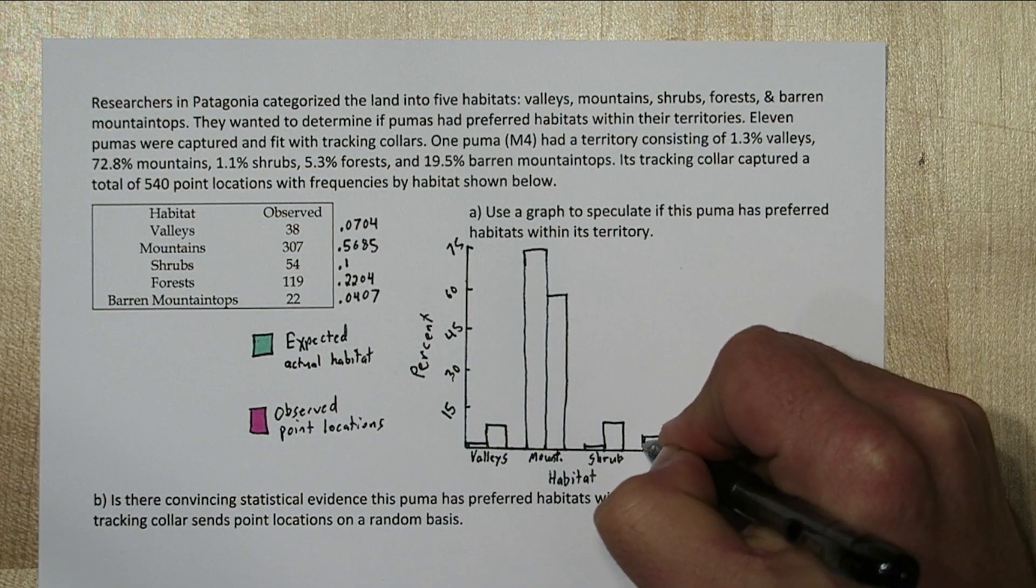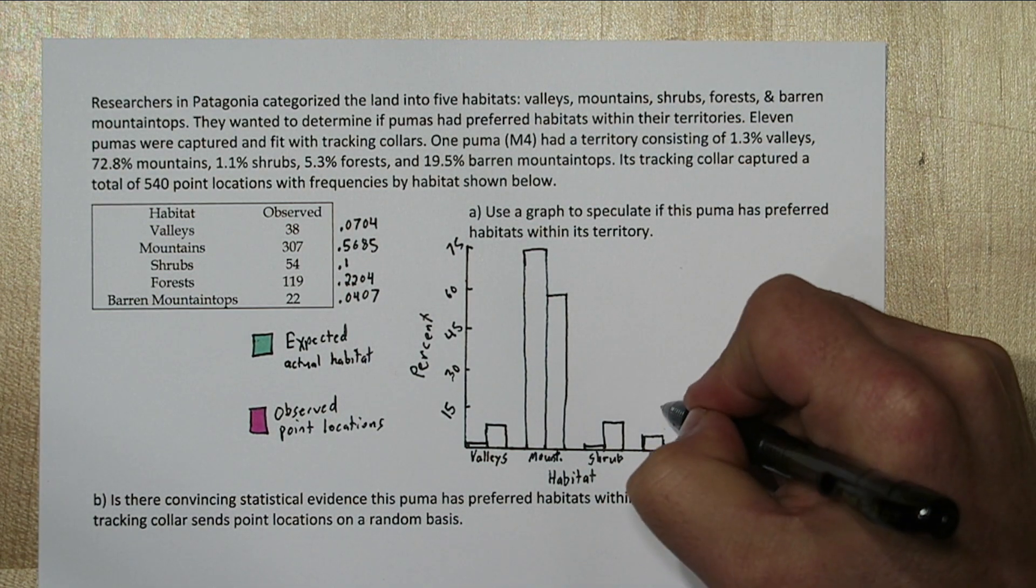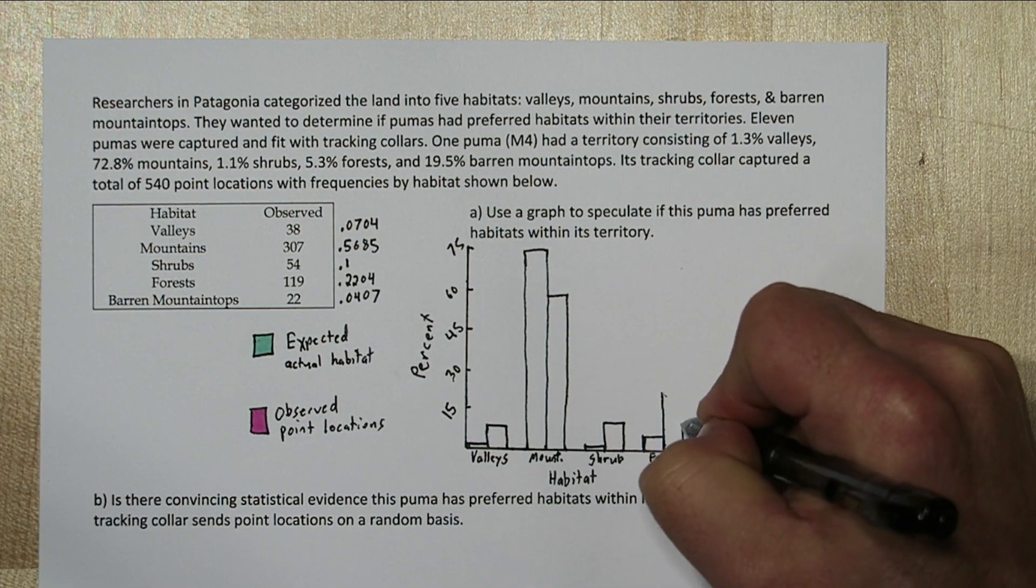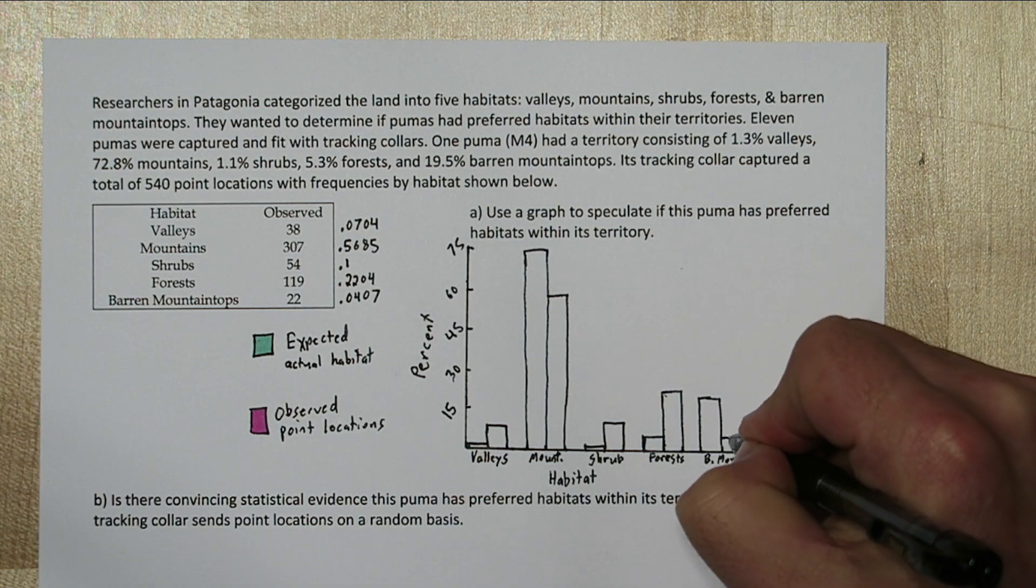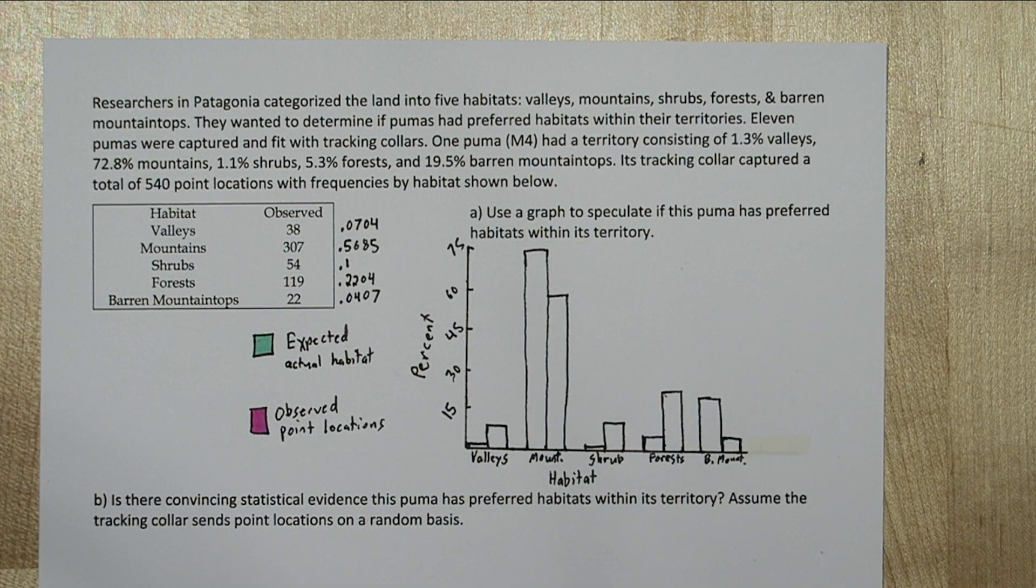5.3% of its actual habitat was forest, versus the 22% of time it spent there. And 19.5% of its habitat was barren mountaintops, but it only spent about 4% of the time there.